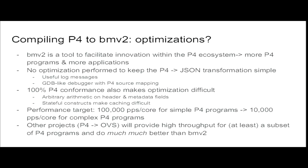For very simple P4 programs we can do above 100,000 packets per second. But when you go to switch.p4, a data center program on P4 language with 50 tables, stateful memories, counters, and meters, we are actually at 10,000 packets per second. People have approached me offering suggestions to increase performance, and we will be integrating some. However, we don't want to compromise on what makes BMV2 convenient. It's not a production tool — it's more of a development tool.